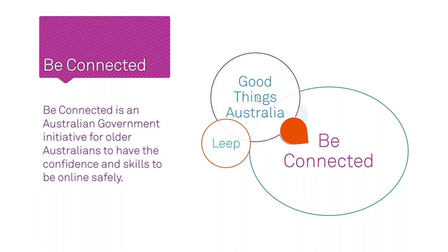We're presenting this webinar today as part of the Be Connected program. This program is being delivered in Australia by the Good Things Foundation, a UK organization with a wealth of experience in supporting digital mentoring. In the UK they use an online e-learning tool that has put over two million people online by developing digital mentoring skills. They are funded in Australia by the Department of Social Services to deliver the Be Connected Network — a federal-funded program aimed at improving digital literacy for older Australians so they can get online safely and confidently.